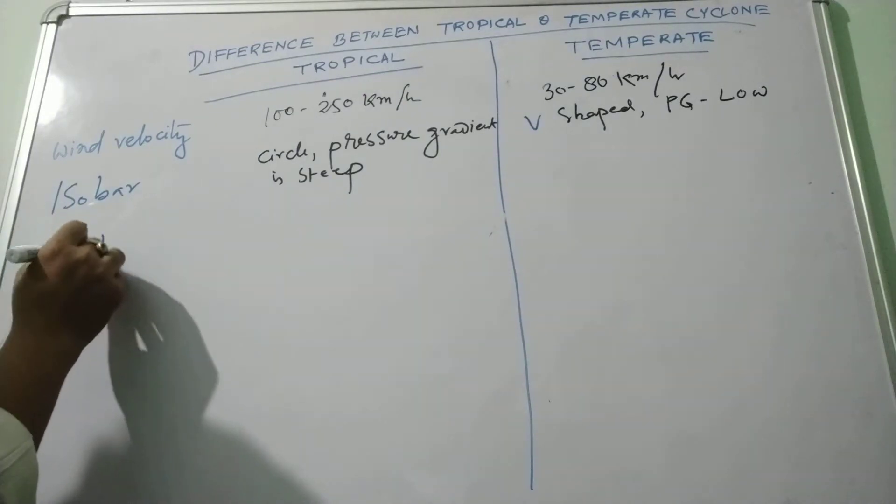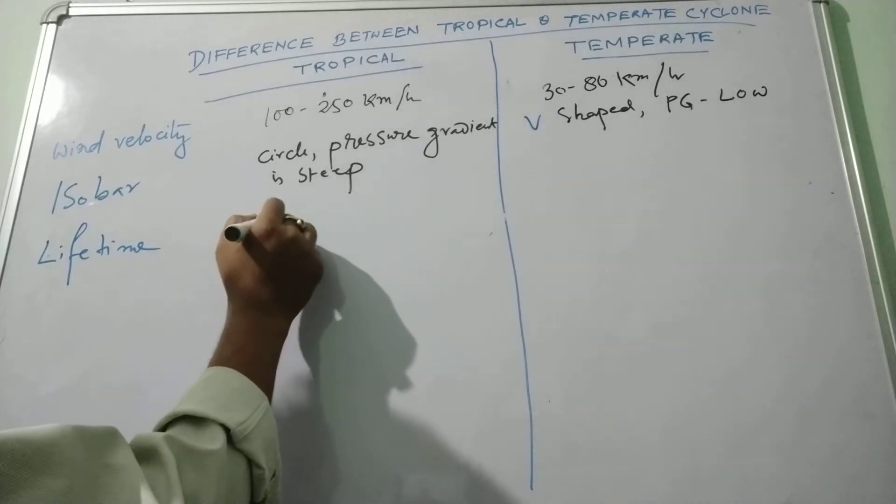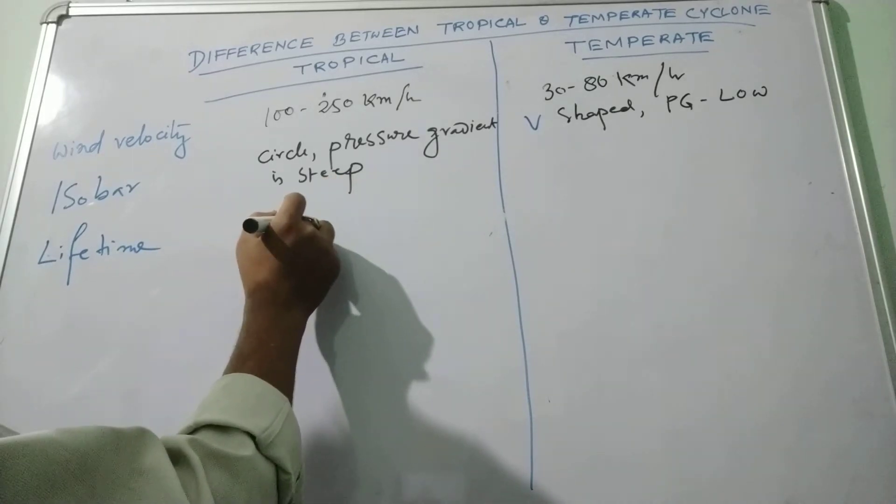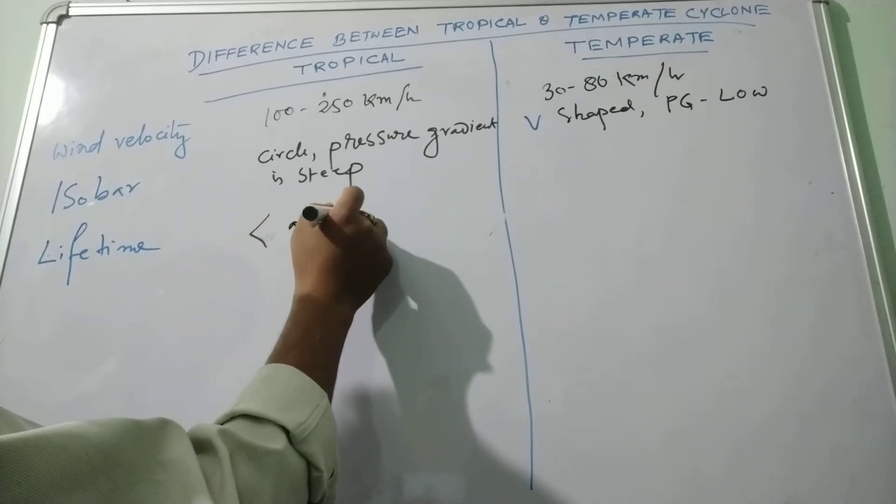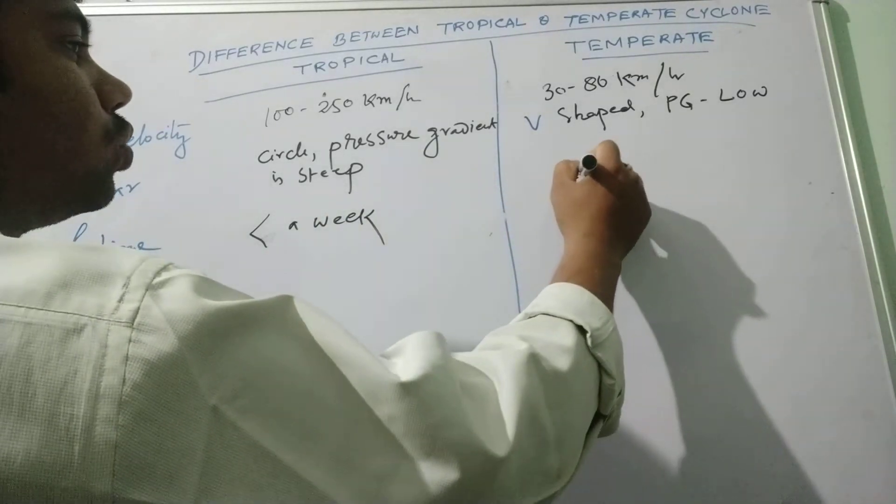Lifetime. In case of lifetime it doesn't last for more than a week. But in temperate cyclone it can last for 2 to 3 weeks.